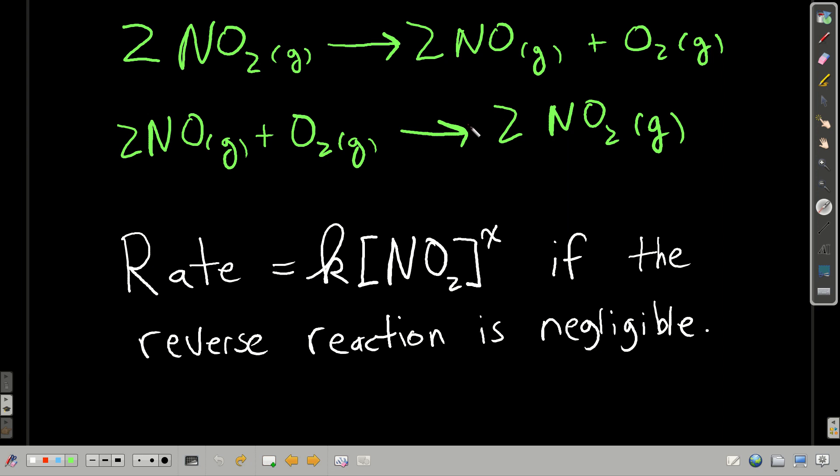But so what we do to make it simple is say, okay, let's set it up so that we don't have any nitrogen monoxide and oxygen or very little recombining to form nitrogen dioxide. If almost all that's happening is nitrogen dioxide is dissociating, then it makes life simpler. Well, when is that? When's that going to be? It's going to be right in the beginning.